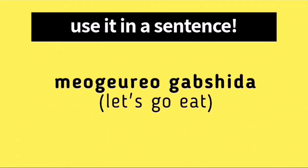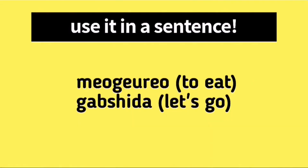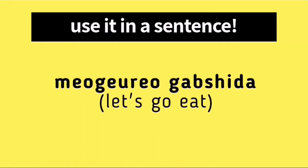Now let's try looking at this example. It says 'mokuro kapsida'. The first part of the example sentence is 'mokuro' and this has something to do with the action of eating. The other part is 'kapsida', which is the formal way of saying 'let's go'. So when we say 'mokuro kapsida', it's the same as saying 'let's go eat'. Looking back at this example, the meaning of 'mokuro kapsida' is 'let's go eat'.